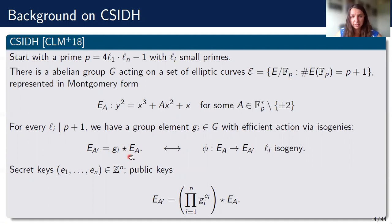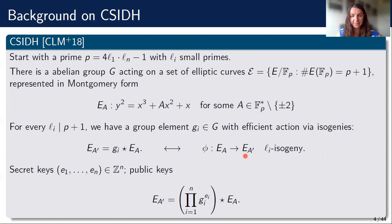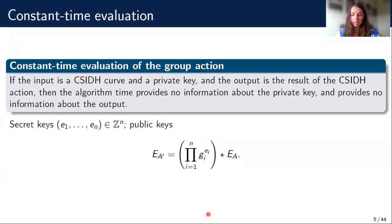By construction in CSIDH, for every one of these primes Li, we have a group element in the mysterious group such that evaluating the group action can be done very efficiently using Li isogenies. We can think of the group action as starting from one elliptic curve and being transported to a new elliptic curve. Isogenies are maps of elliptic curves — starting from one curve you map to another elliptic curve. The group action that we need to evaluate in CSIDH is given by composing these small elements Gi that we know how to act with efficiently.